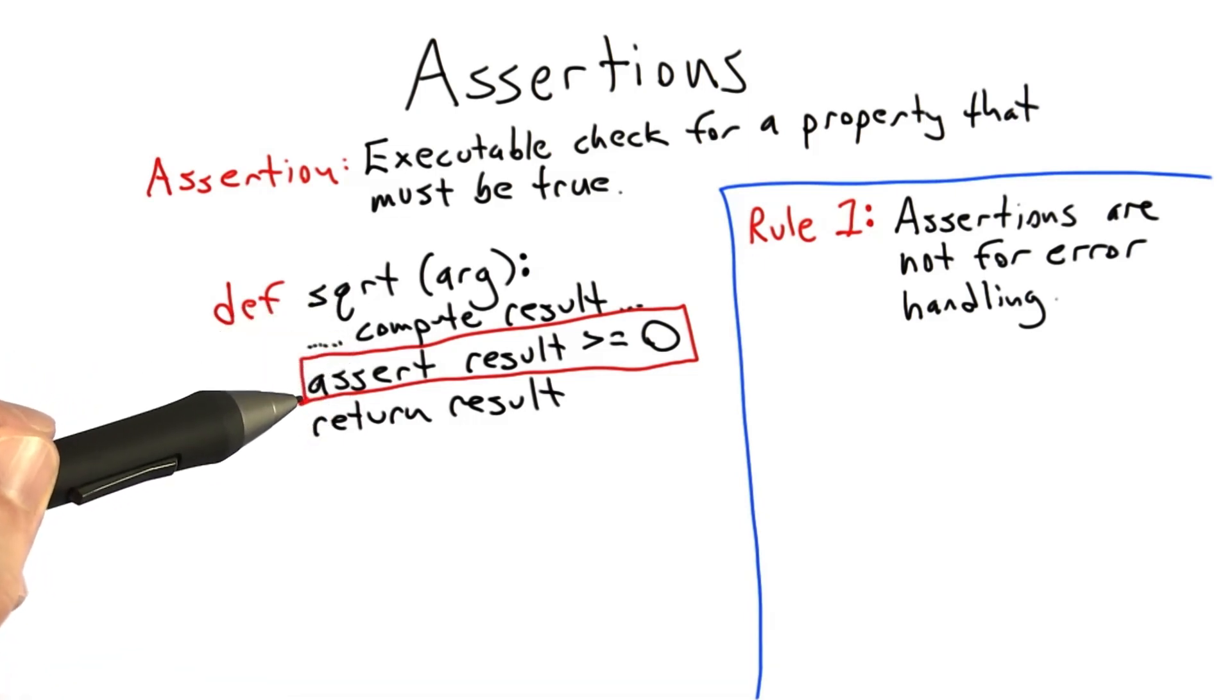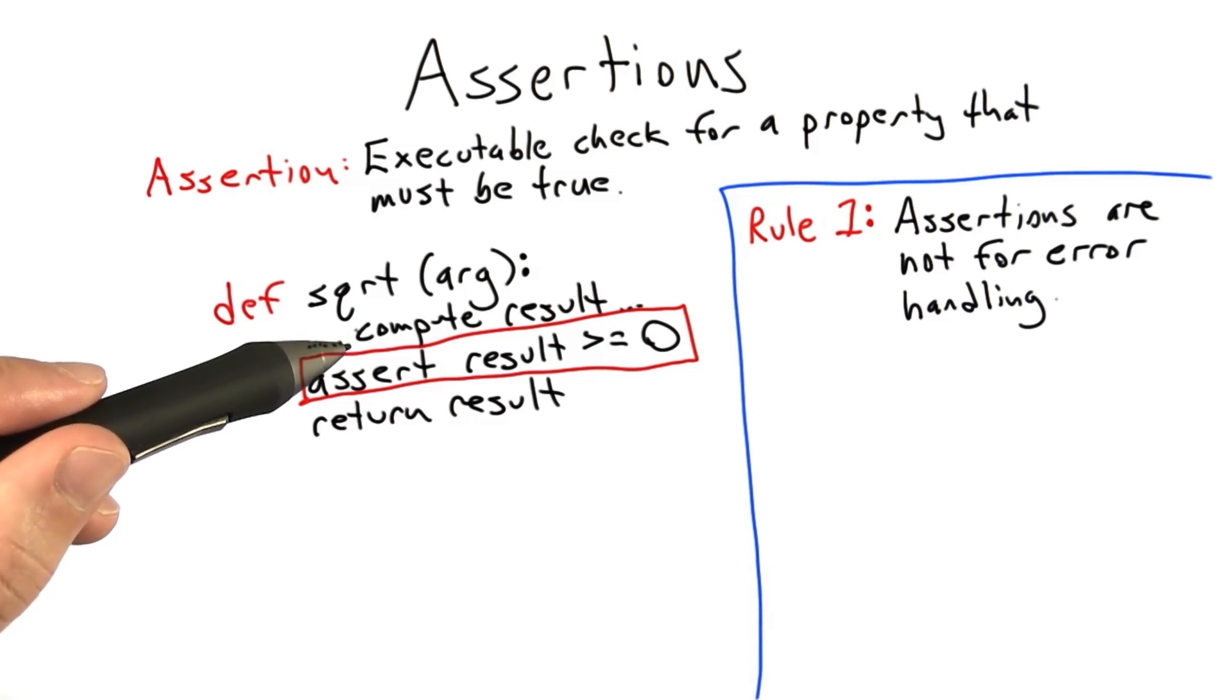The assertion that we put into the code asserts the result of our logic, that we wrote, is sane. It's not asserting something about the behavior of some other entity in the program. That would generally be more in the domain of error checking.